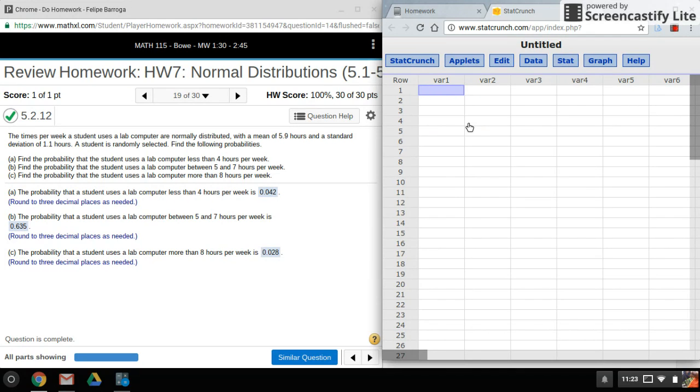Hi everyone, welcome back. For today's video, I'll be using StatCrunch to find the areas using the normal curve, this time with data, because we don't always have to use z-scores.